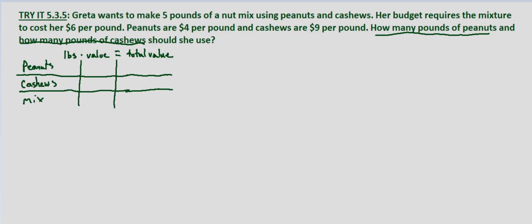I've set up a table here where the number of pounds times the value of each pound equals the total value. For peanuts, let P equal the number of pounds of peanuts. The value is $4 per pound, so the total value is 4P. For cashews, let C equal the number of pounds of cashews. The value is $9 per pound, so the total value is 9C.